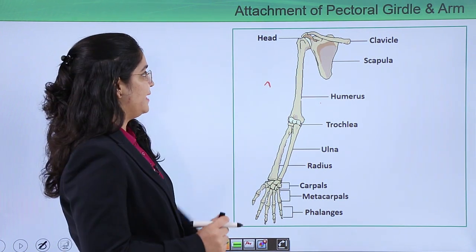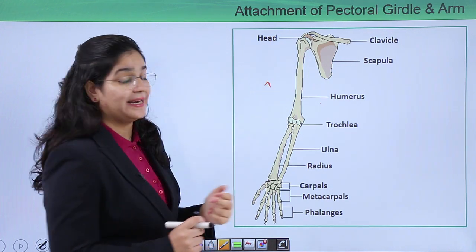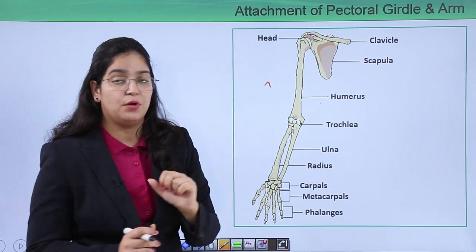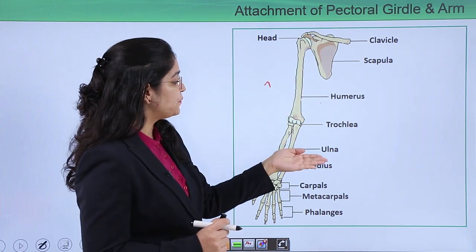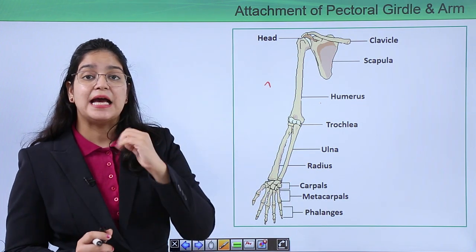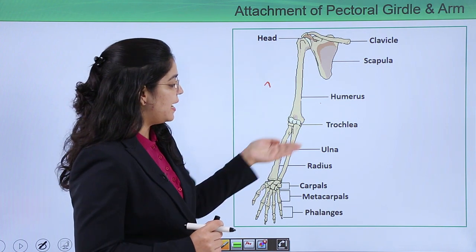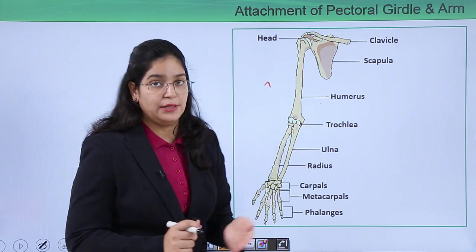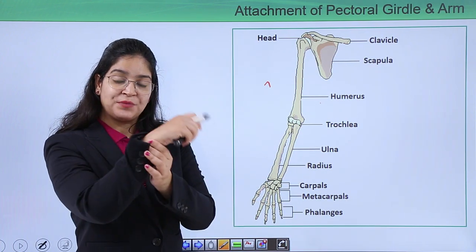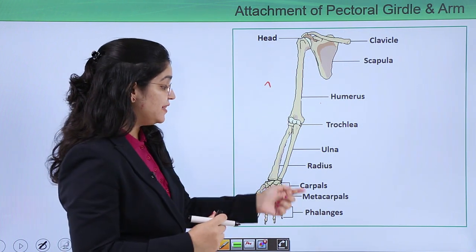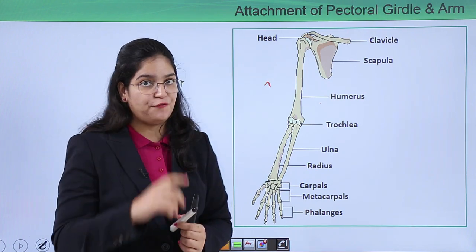In the pectoral girdle we have two main bones: the clavicle and the scapula. Our arm bone starts with the head. We have three long bones in our hand: the humerus, the radius, and the ulna. The humerus and the radius and ulna are connected through our trochlea. In the hand we have the carpal bone in the wrist portion, the metacarpal in the palm portion, and the phalanges in the fingers.